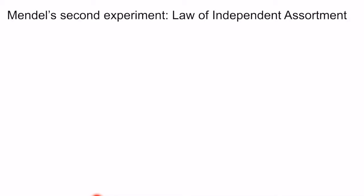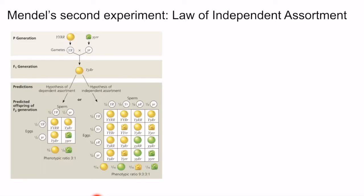Lastly, I want to talk about Mendel's second experiment and how it relates to the law of independent assortment. In this experiment, Mendel followed two characteristics at the same time — seed color and seed shape simultaneously in pea plants. For seed color, Mendel knew that the yellow allele was dominant and the green allele was recessive. For seed shape, the round allele was dominant while the wrinkled shape was recessive.